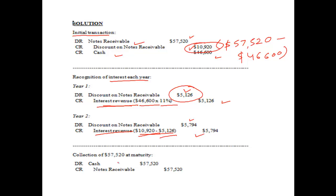Next, for the collection of $57,520 at maturity, cash will be debited with the same amount and notes receivable will be credited.